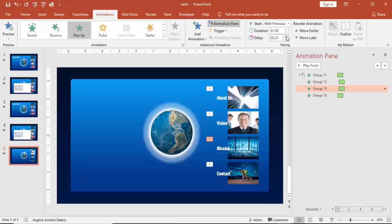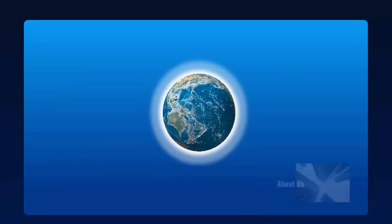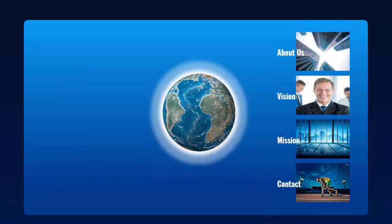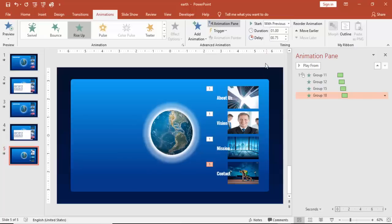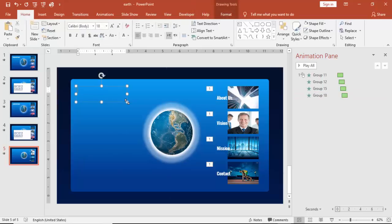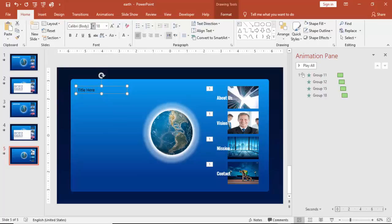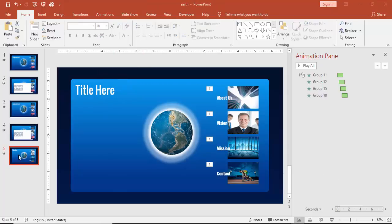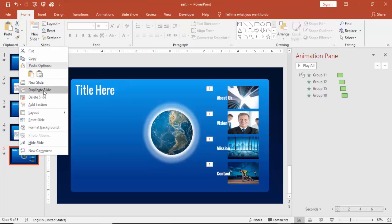Set Rise Up with previous, and I'm going to add a delay — 25 seconds for the first, then 50 seconds, then 75 seconds for the others. If I play it will show the animation sequence. Go to Insert and add a text box for the title — you can add any title there. Choose the right combination — the text should be white, otherwise it won't be visible if you use a different color.